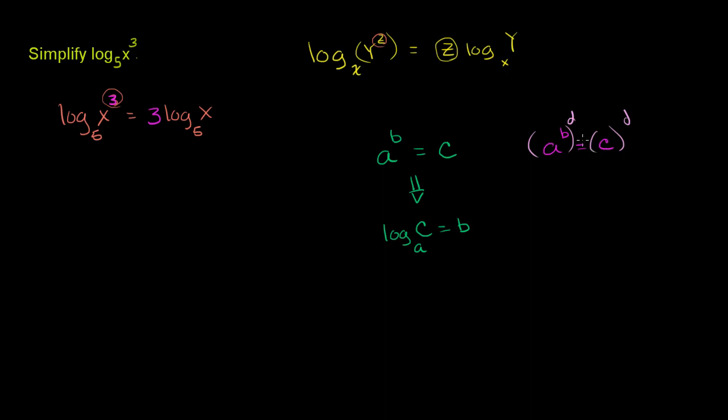Now what's interesting is we can use what we know about exponent properties. If I have a to the b power and raise that to the d-th power, exponent properties say this equals a to the bd power.